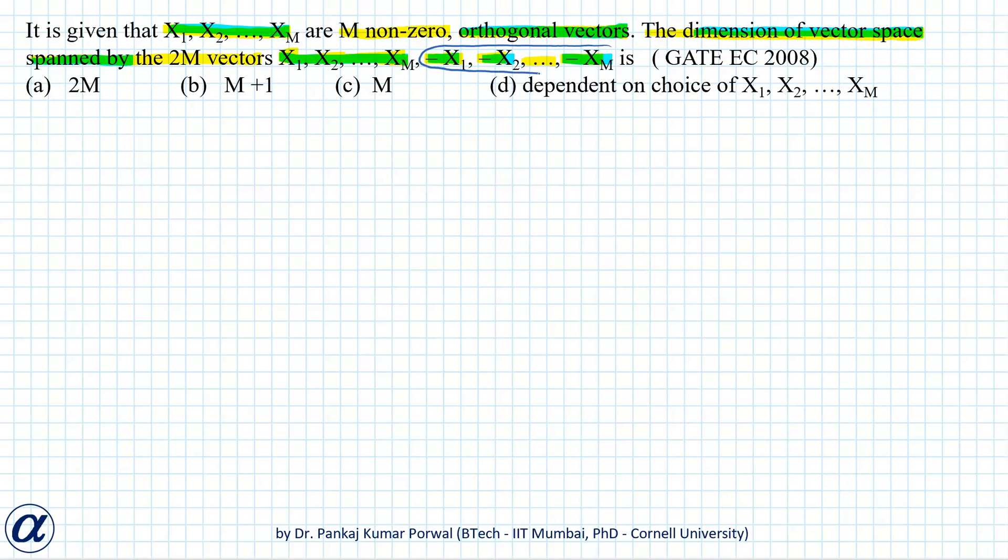So these are the linearly dependent vectors in our collection and these are linearly independent vectors. Therefore, the dimension of our vector space will be m. So option c is correct.